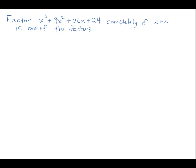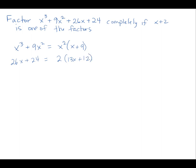Let's approach a problem a little differently. Let's factor x³ + 9x² + 26x + 24 completely and see if (x + 2) is one of the factors. Generally when we have 4 terms, we want to do this by grouping. Taking the first two: x²(x + 9), and the last two: 2(13x + 12) — well, that was absolutely not helpful. Even if I regroup it, that's not going to help. So factoring by grouping doesn't work here.